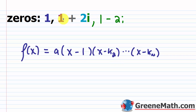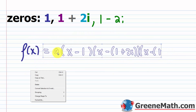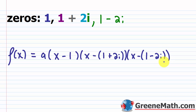For the complex zeros, it's a bit more complicated because I'm subtracting a complex number. So I'll write x minus (1 plus 2i) times x minus (1 minus 2i). In this case, you're not given any additional point to figure out what a is, so a is just going to be 1.